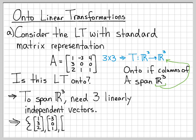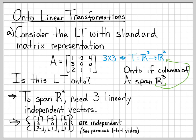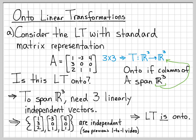The question is whether the vectors {1,3,2}, {-3,0,1}, and {4,0,1} are linearly independent. In the previous video, we constructed an augmented matrix for the homogeneous system and found only the trivial solution, confirming these vectors are linearly independent. Since there are three linearly independent vectors, they span R3, and this linear transformation is onto.